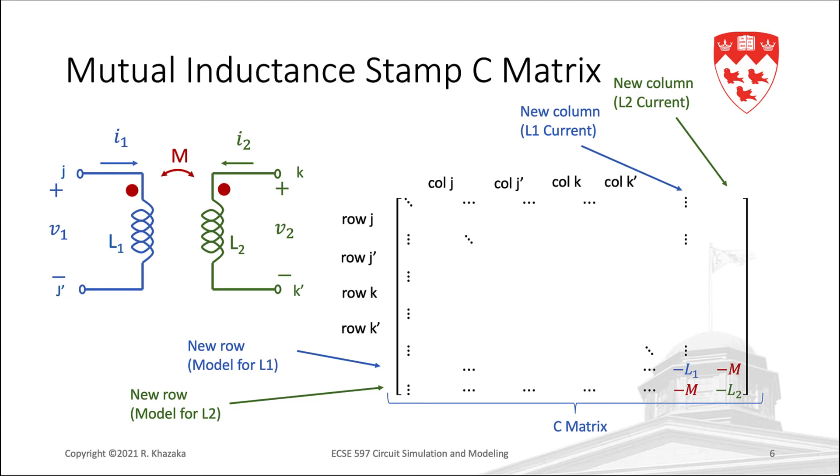In the C matrix, we have L1 and L2 on the diagonal as part of the regular inductor stamps. Remember, these appear in the diagonal entry corresponding to the new row and new column for each inductor. The mutual inductance appears off-diagonal in red.